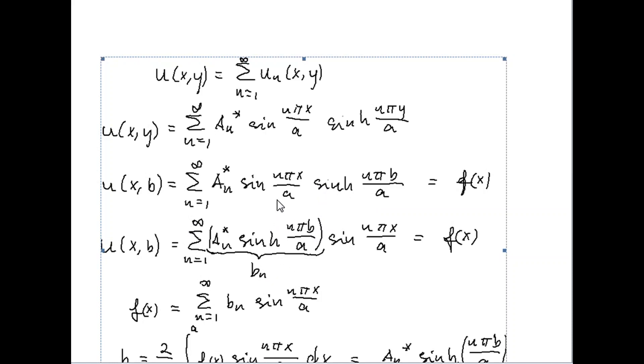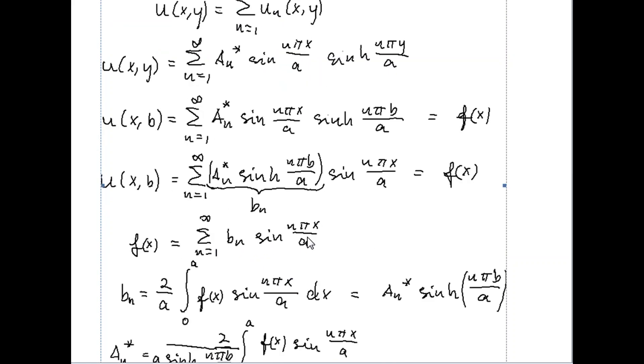And rearranging a little bit, here we have just changed the order of the product here. And we note that this is a constant only dependent on n, so it's written like this, and then we realize that this is the Fourier series of the function f of x. So b_n must be the Fourier coefficient given by this integral.